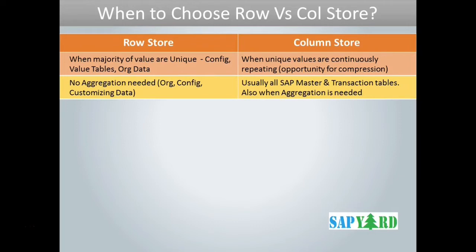But in transaction tables — say sales order, delivery, or billing — we need aggregation for reporting and analysis. The sales manager would need to know which product had the maximum sale for the day. The delivery manager would have to provide the average time taken for the product to reach the customers. So whenever any mathematics is needed, column store is the choice.